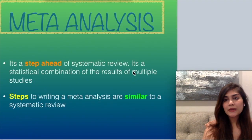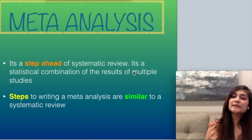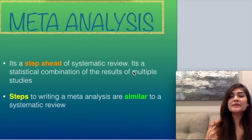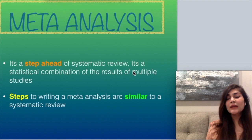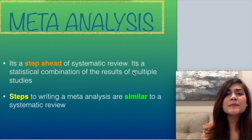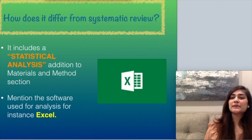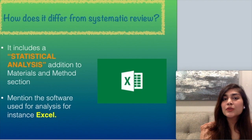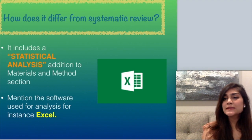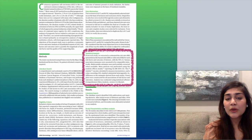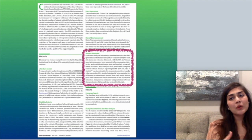Now we will talk about meta-analysis. It is basically a step ahead of systematic review — a statistical combination of the results of multiple studies. Meta-analysis is a statistical combination of the data compiled and derived from a systematic review. The steps to writing a meta-analysis are similar to a systematic review, but the difference is including a statistical analysis portion in the methods section, mentioning the software used for analysis, such as Excel.